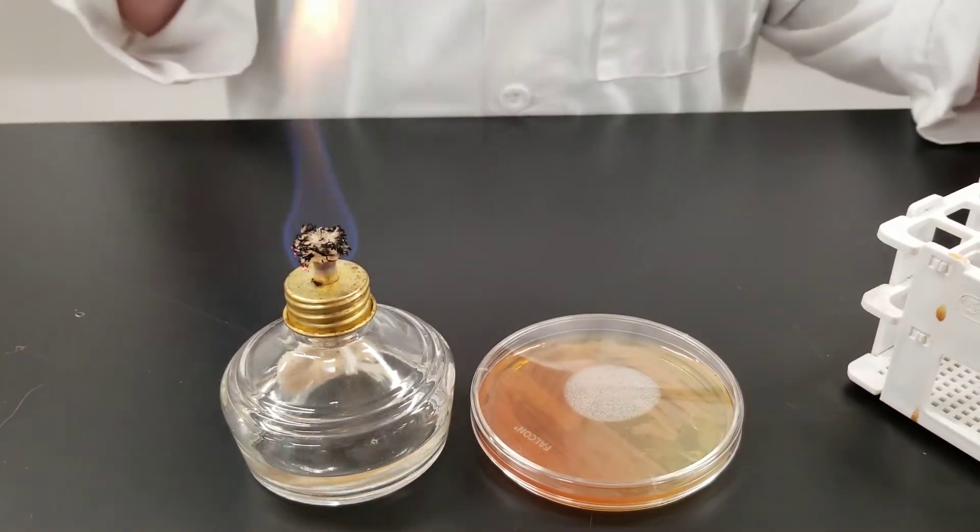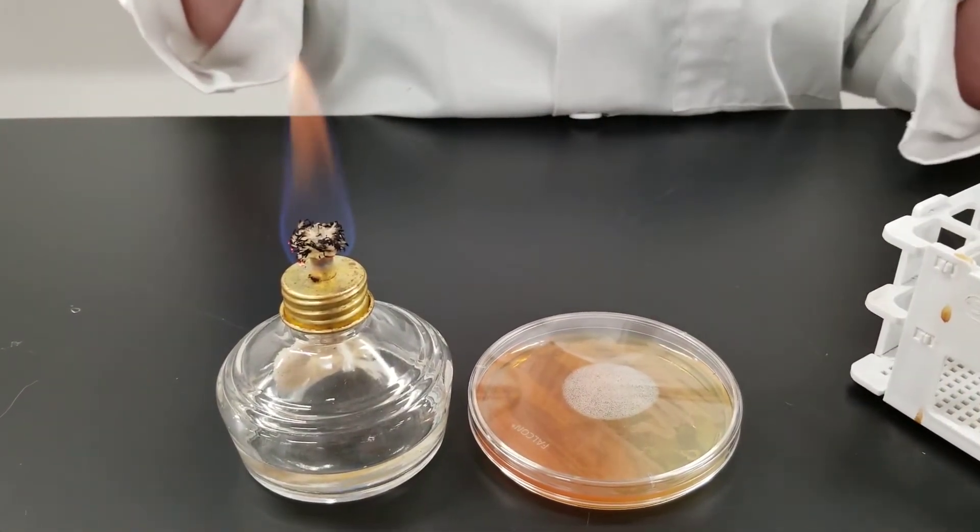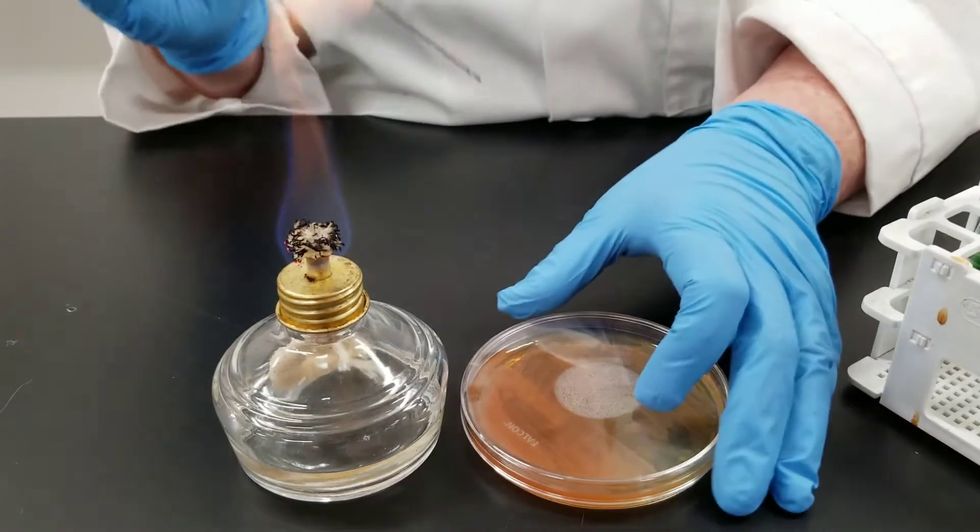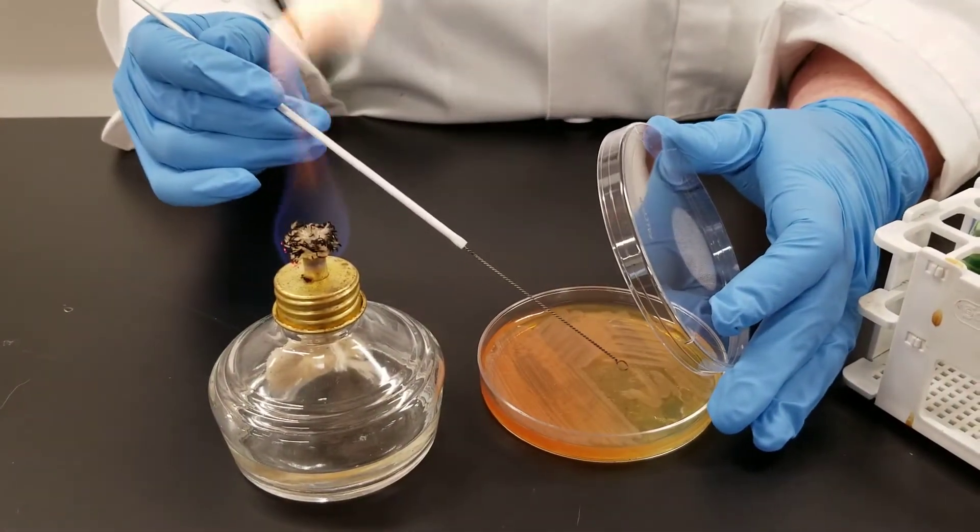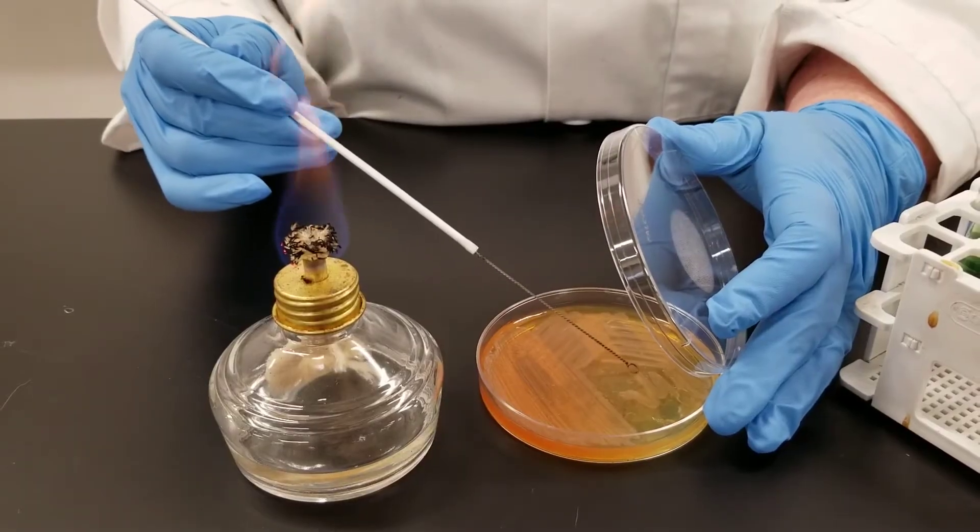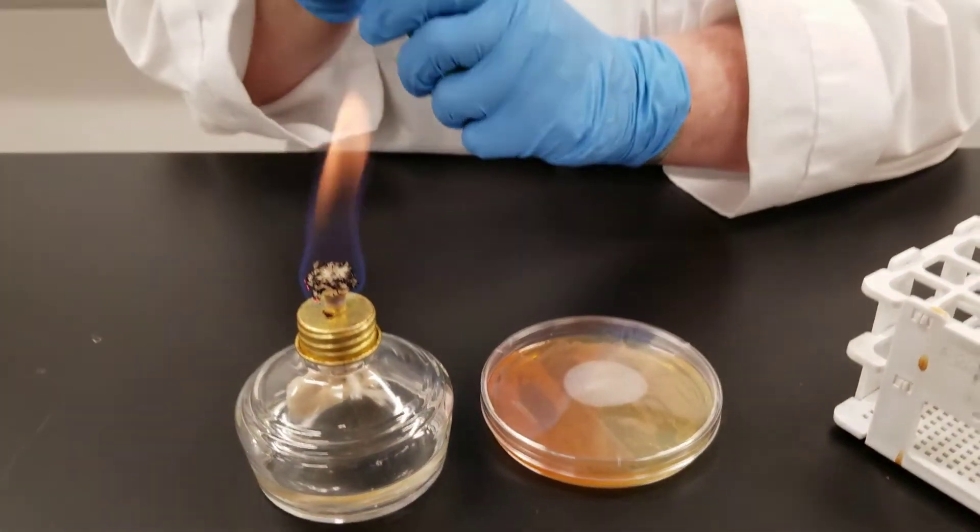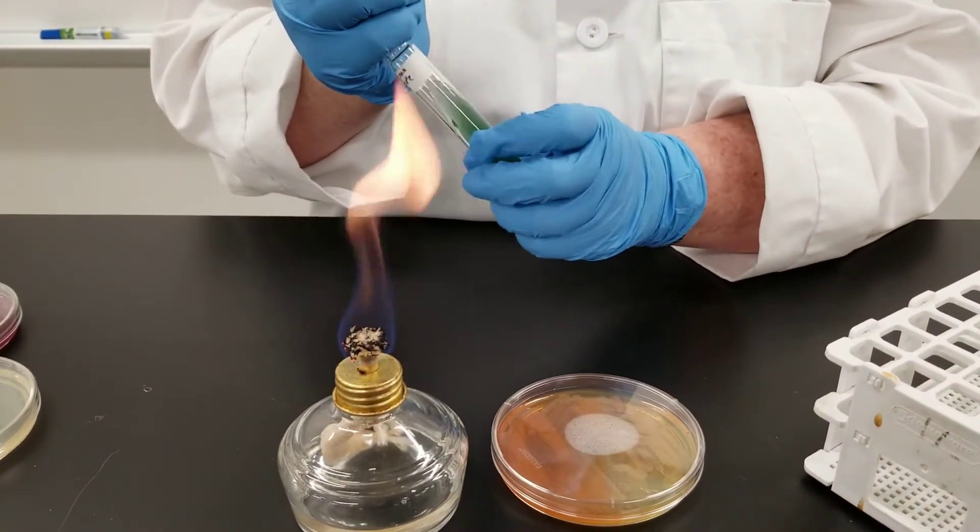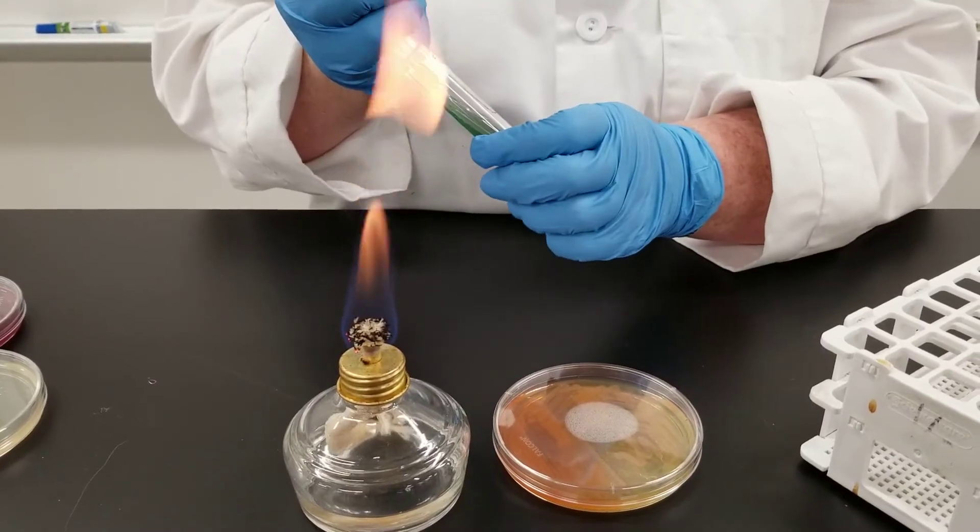Now what I'm going to do is inoculate a slant. This is a Simon citrate slant. I'm going to inoculate that once again going from this stock plate. By the way, the bacteria we are using is Pseudomonas aeruginosa. It is a gram-negative organism commonly found in the soil. It can also cause various infections in humans.